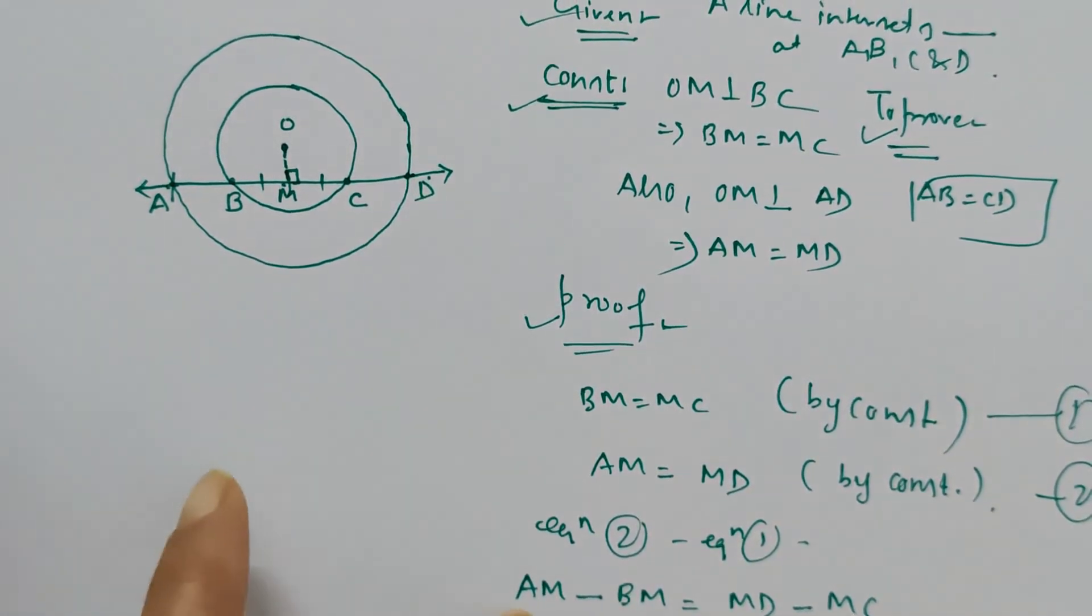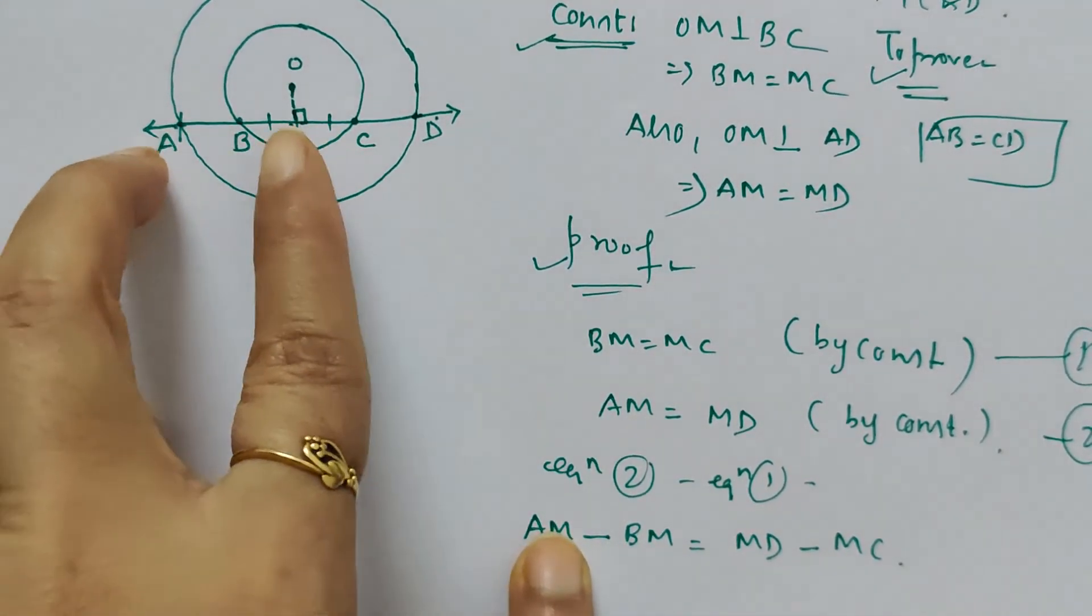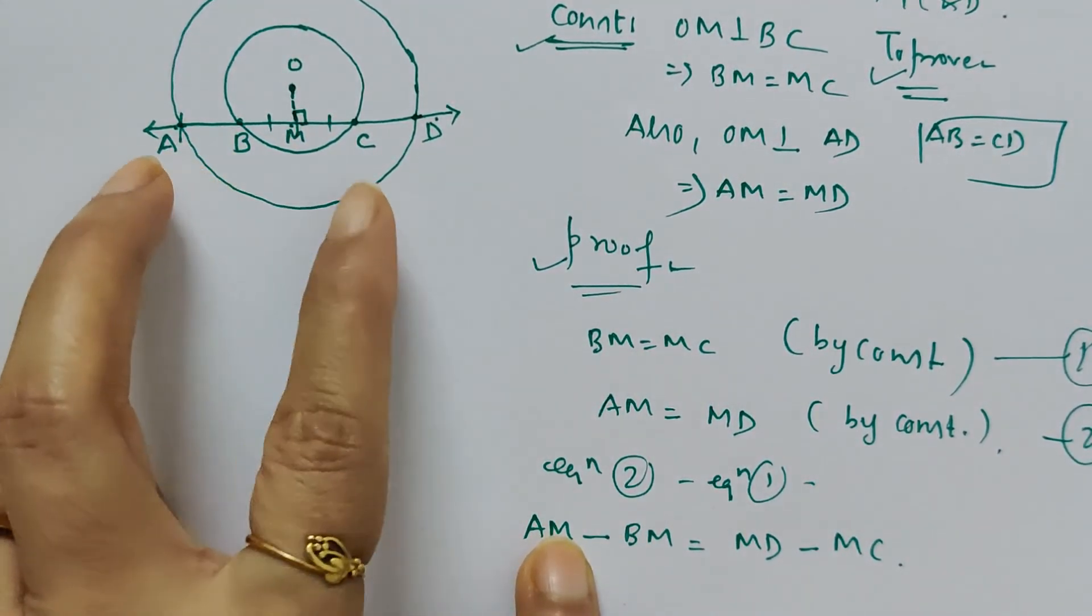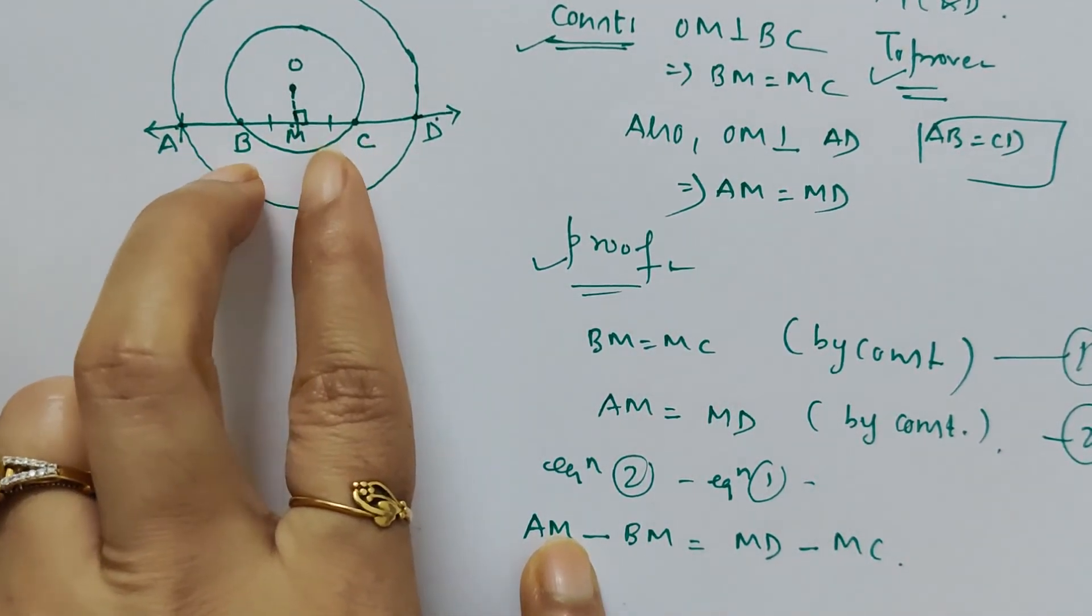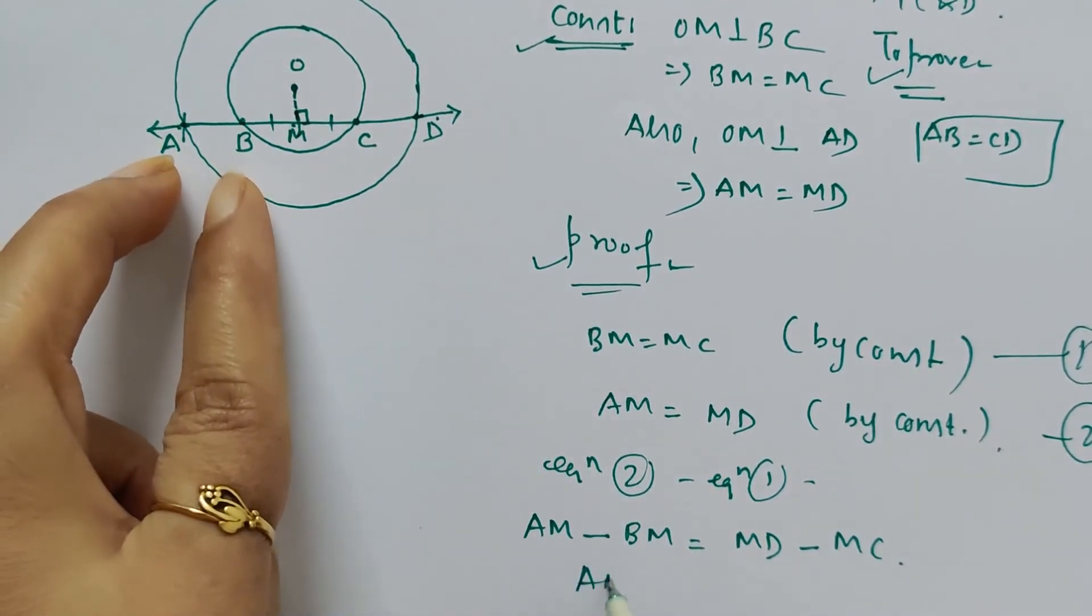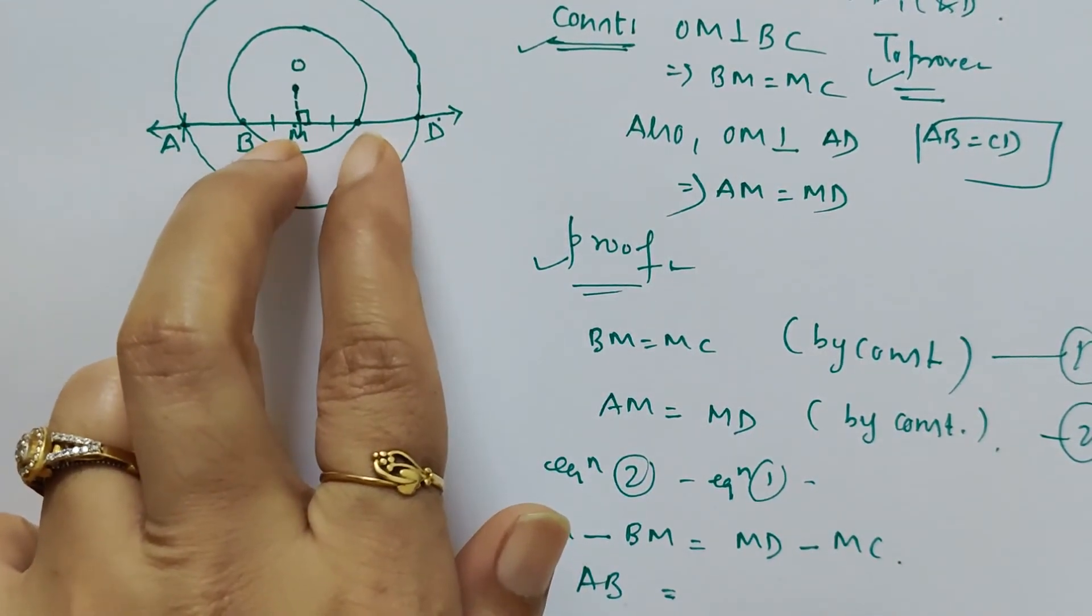If we subtract BM from AM, we're left with AB. Similarly, if we subtract MC from MD, we're left with CD. So AB equals CD.